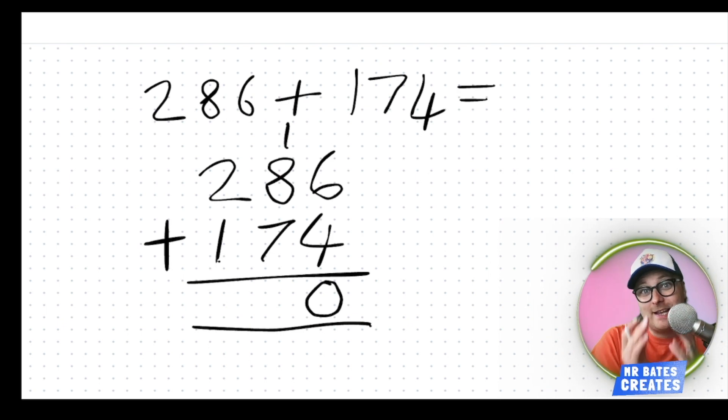So now I can look at my tens column and add those up. So I've got one, add eight, add seven. Let's see how I can do this one then. Eight add seven. Eight and two make 10 and two and five make seven. So that means that's going to be 15 plus the one there that's on the top, not forgetting. That's going to give us the answer 16.